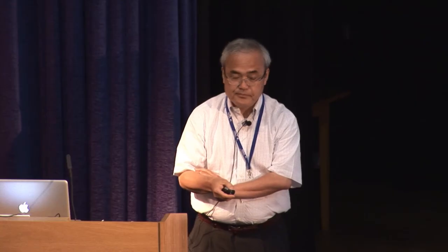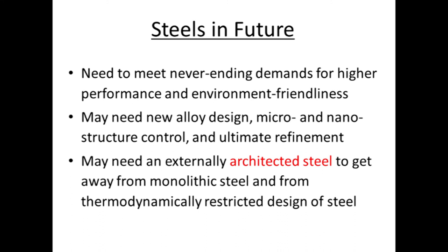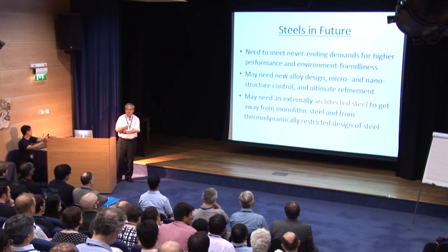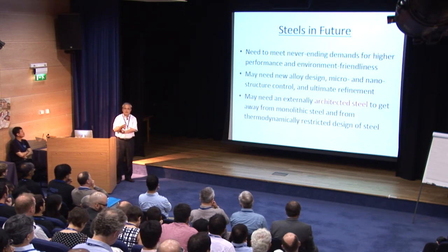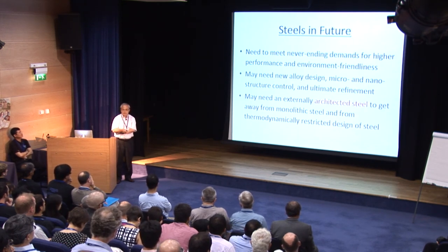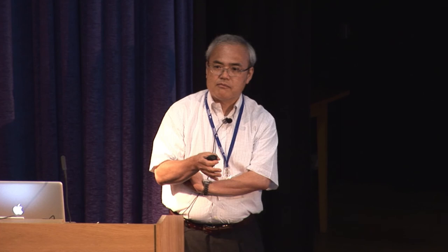How can we do that? We may need new alloy designs, and we may need new micro- and nano-microstructure control that we haven't tried in the 20th century. We may also need ultimate refinement of microstructure and grain structures. Alternatively, we may need externally architected steel — externally designed steel — where we can move away from monolithic steels and part from thermodynamic restrictions in the design of materials. This is my proposal here.